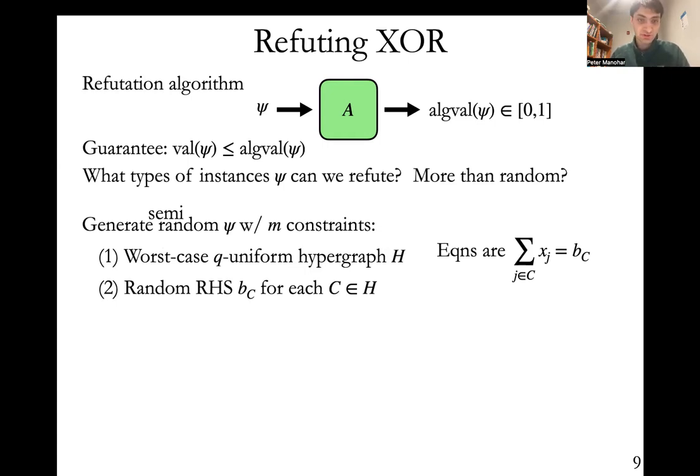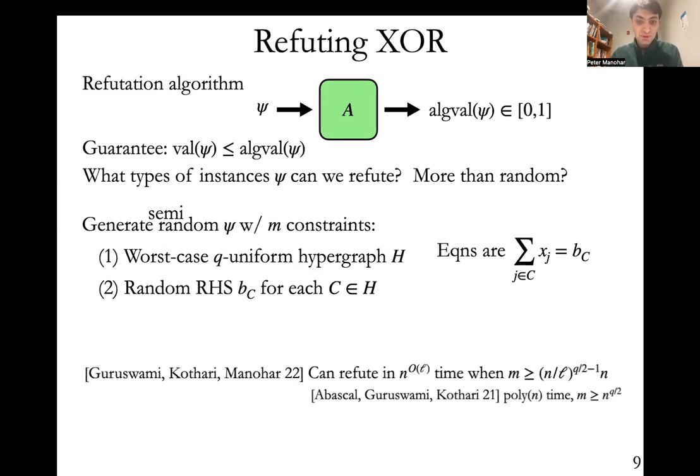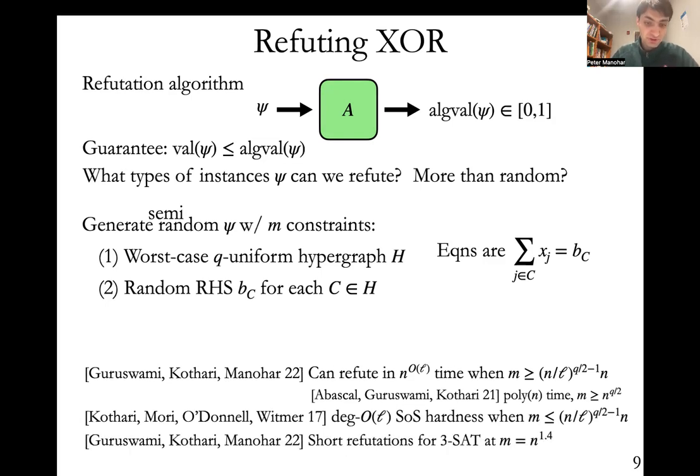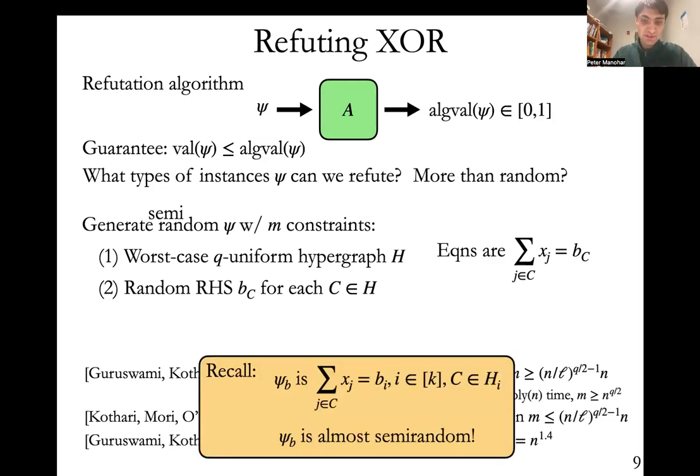You can ask, what can you do here? Are these instances harder to refute than random? You might think they're harder to refute than fully random instances—worst case hypergraph feels harder—but it turns out that this is not the case. A work of Venkat, Pravesh and myself shows that you can refute these instances in essentially the same amount of time and with the same number of constraints as you needed to refute random instances. So they're no harder to refute than random ones. And again, this lower bound of Kothari-Mori-O'Donnell-Witmer still applies. And we also show that those FKO certificates that existed for random 3SAT also exist even in the case of semi-random or even smooth 3SAT.